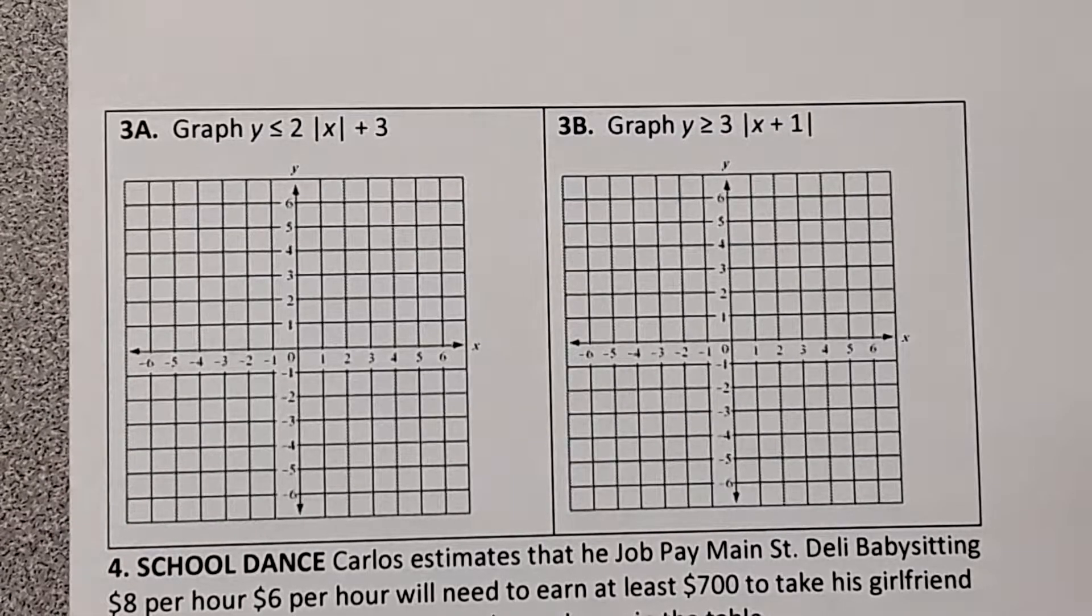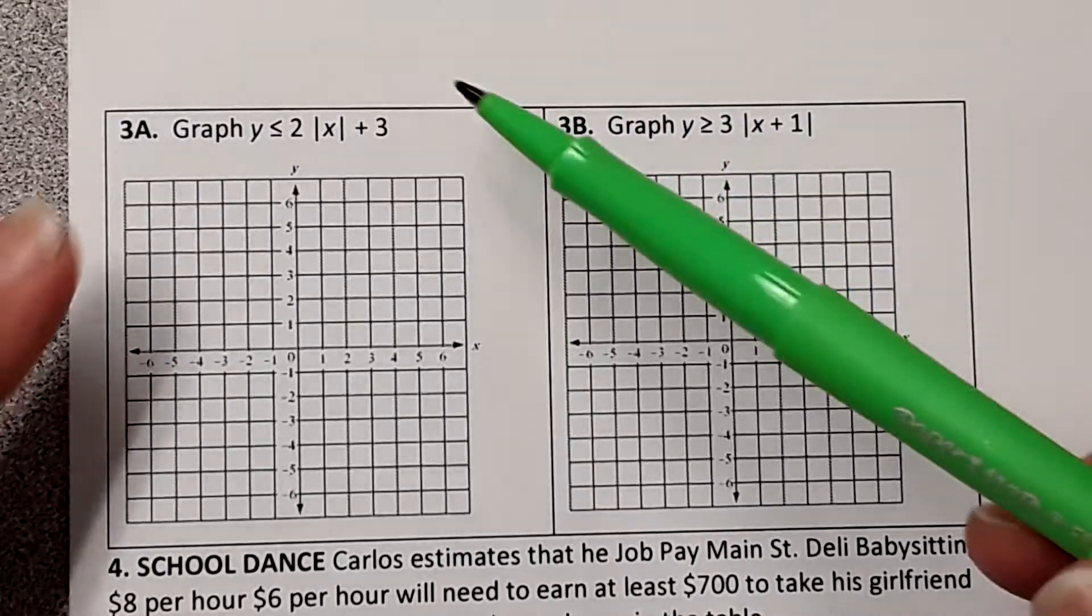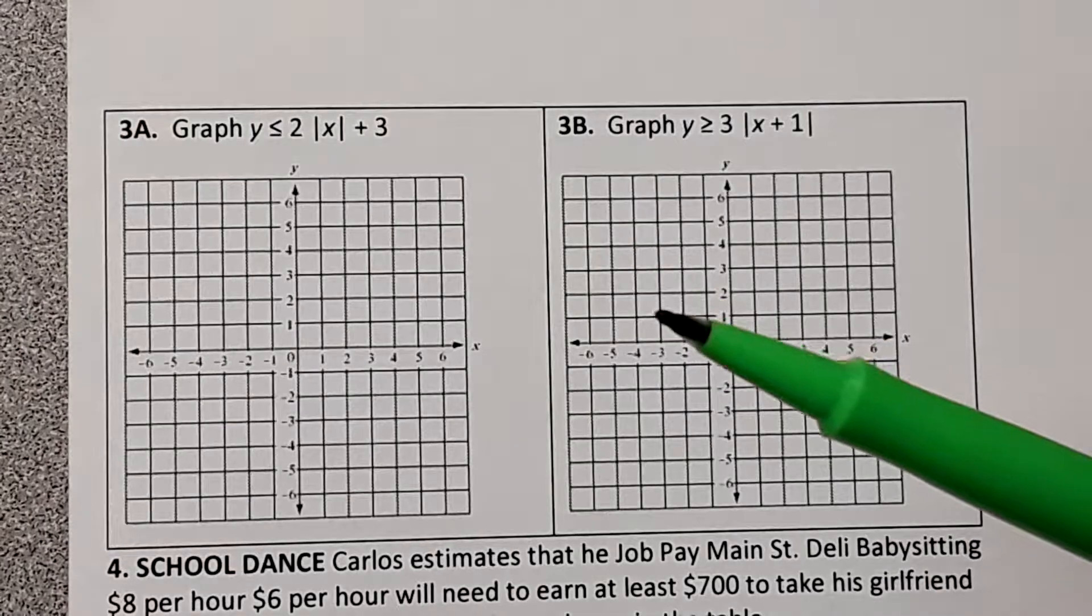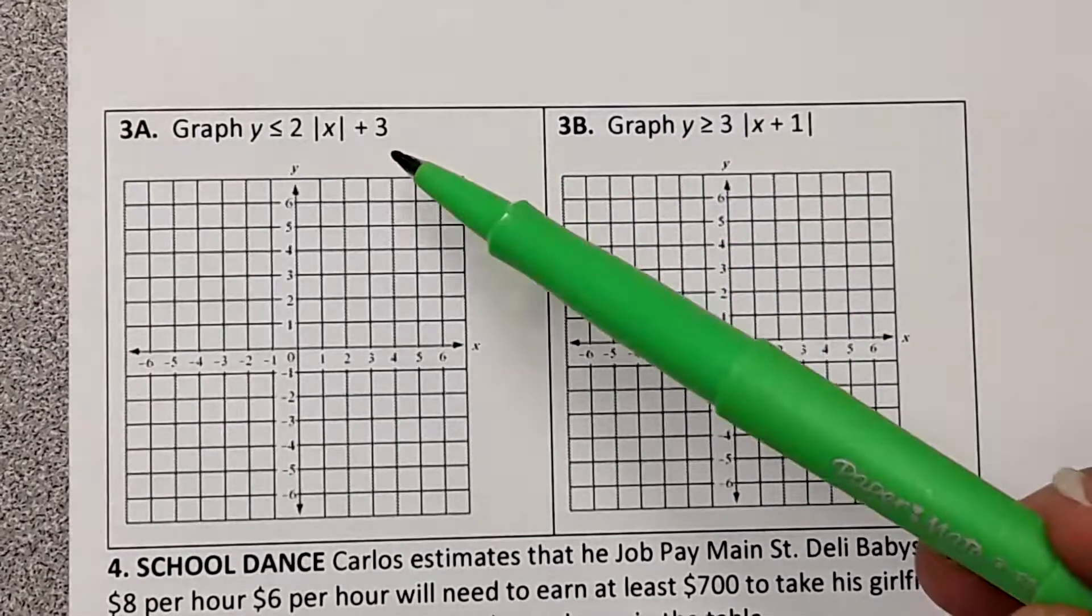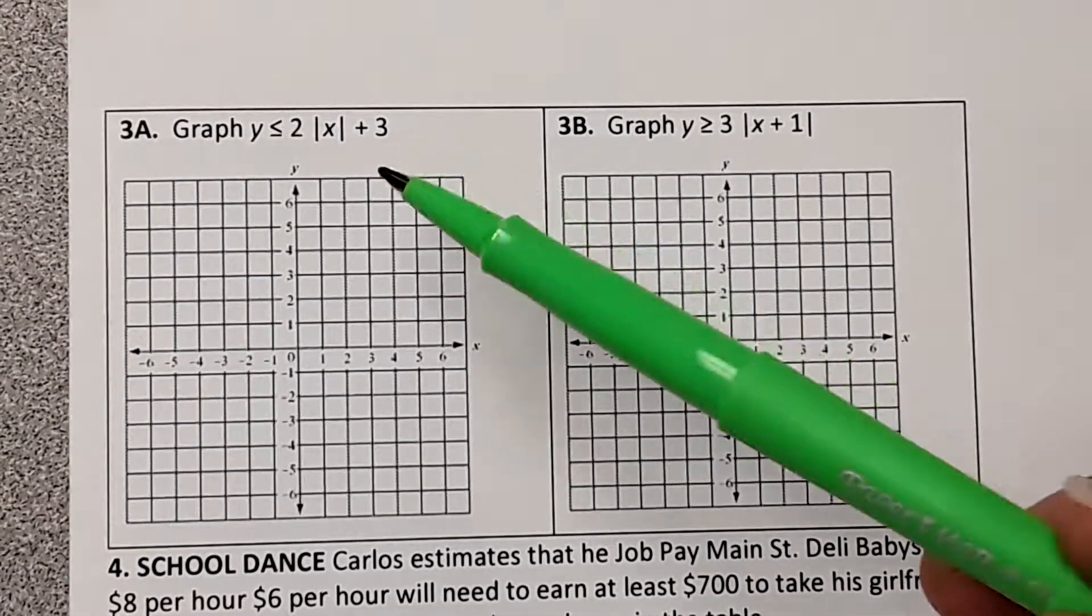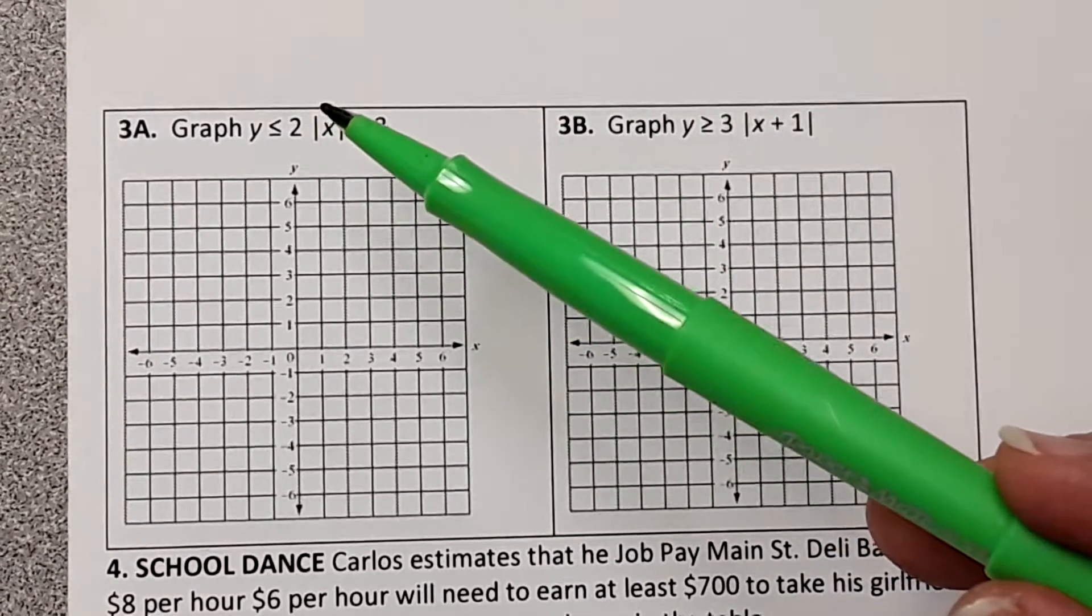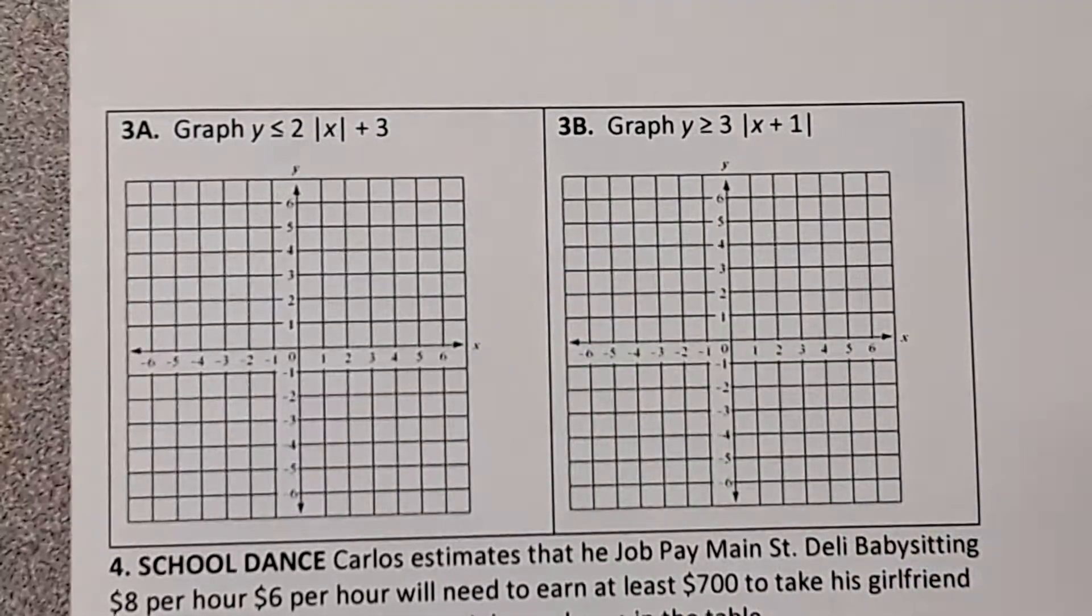Let's make a table. But we do know a couple things. We do know that our vertex is going to be up to 3, right? Because it's on the outside, so it's up. And we know that the number's on the outside. So if the number's on the outside, what did we learn? Is it going to be compressed or stretched?